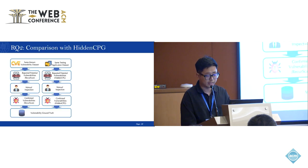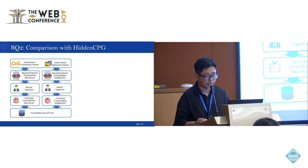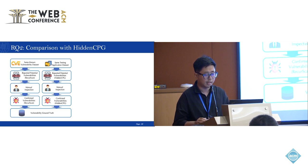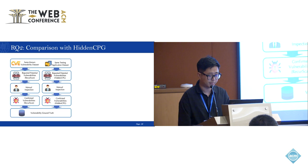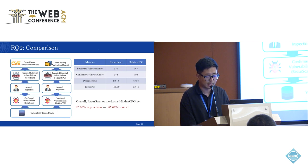To answer the second question, we compared the effectiveness of Rikerscan with HiddenCPG, the state-of-the-art approach for detecting recurring vulnerabilities in PHP web applications. Since comparing accuracy requires a comprehensive enumeration of all vulnerabilities within the testing site, which is unfeasible, we constructed a ground truth by aggregating all vulnerabilities detected by both Rikerscan and HiddenCPG, with each confirmed by security experts. Both tools were applied to the same testing site using the same known vulnerability dataset. As a result, Rikerscan outperformed HiddenCPG by 25% in precision and 87% in recall. Notably, Rikerscan successfully found all the vulnerabilities that HiddenCPG detected, achieving a recall of 100%.